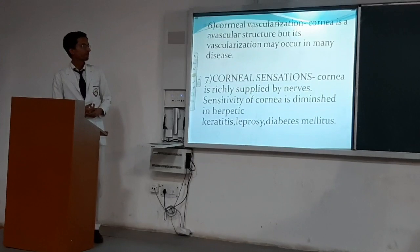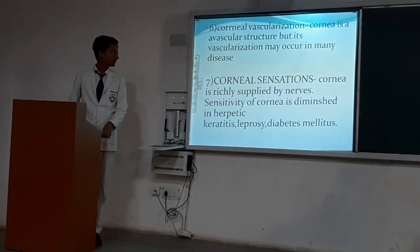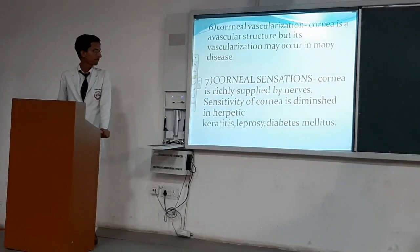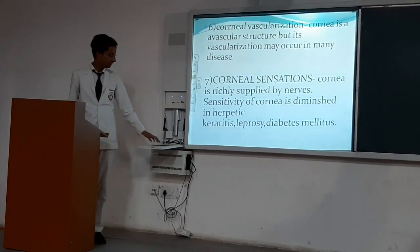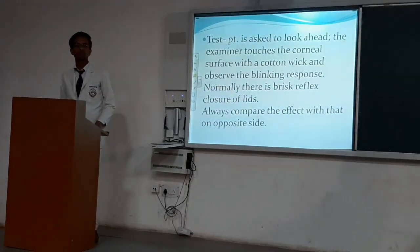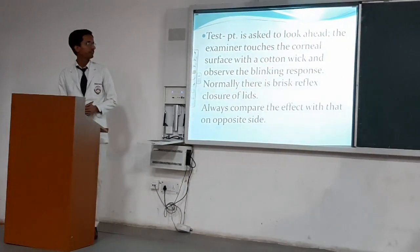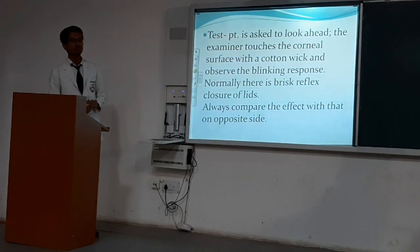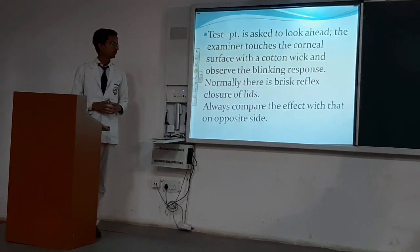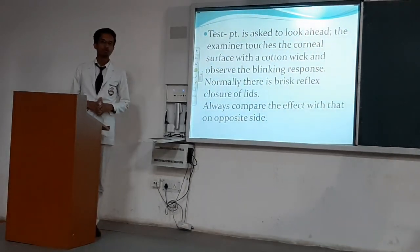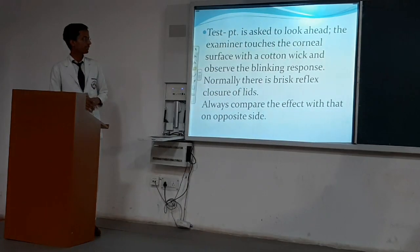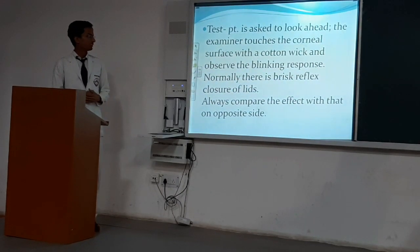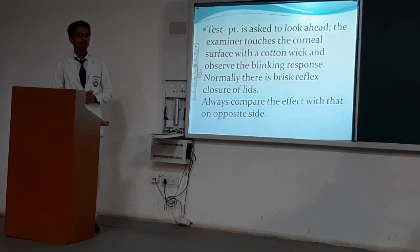Corneal sensation — the cornea is richly supplied by nerves. Sensitivity of the cornea is diminished in herpetic keratitis, leprosy, and diabetes mellitus. To test the corneal sensation, we take the patient to look ahead. The examiner touches the corneal surface of the patient with a cotton wick and observes the blinking response. If the cornea is normal, we will get a brisk reflex closure of the eyelid. In this test, we always compare the effect with that of the opposite side.